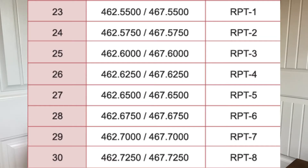The radio comes pre-programmed with eight repeater channels. Those channel numbers are 23 through 30.